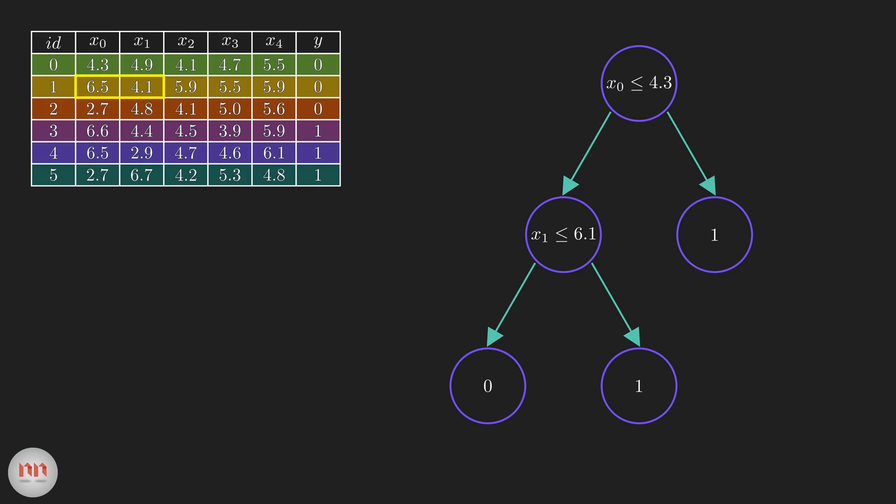Now, if we train our tree on this modified data set, we will get a completely different tree. This shows us that decision trees are highly sensitive to the training data, which could result in high variance. So, our model might fail to generalize. Here comes the Random Forest algorithm.